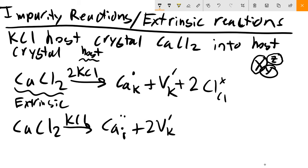Scrolling across the X positions for mass balance, we have Ca - no Cls yet. We write Cl on a Cl site, neutral charge, and we need two of them. Vacancies don't contribute to mass balance - there's nothing there we really care about. So along X we're fine.